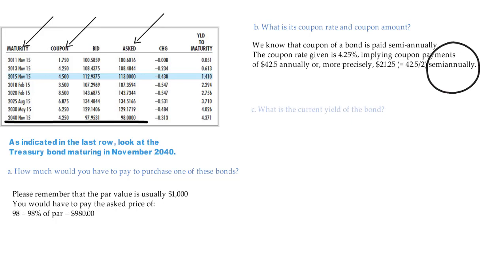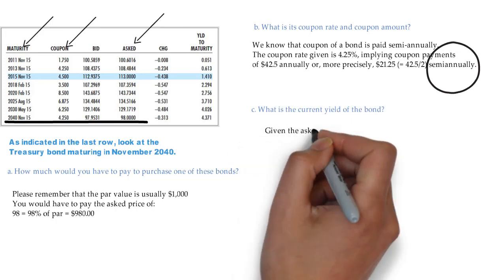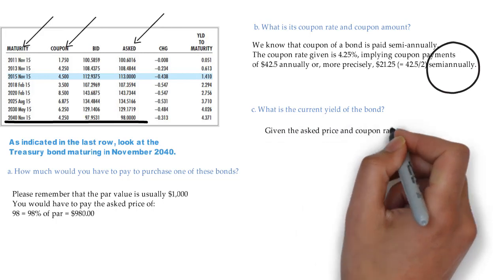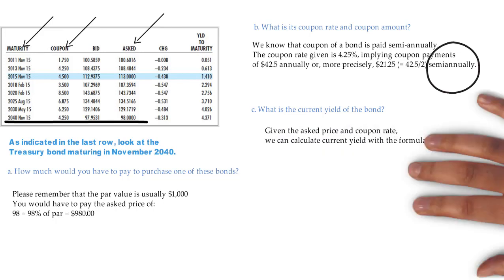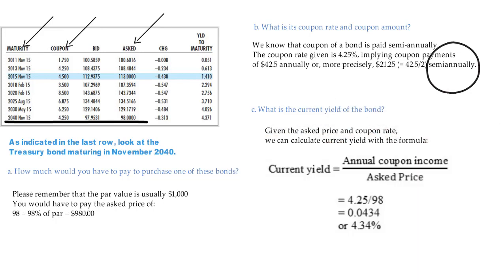Third, what is the current yield of this bond? Given the asked price and coupon rate, we can calculate current yield with the following formula. Current yield equals annual coupon income divided by asked price, which means you divide 4.25 by 98. That gives you 4.34%.